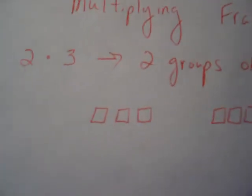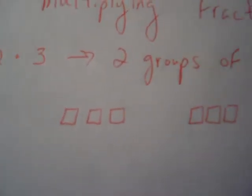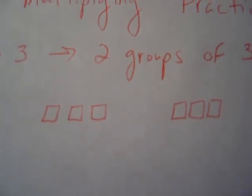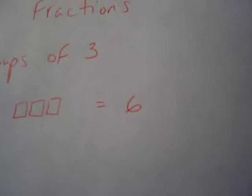So if I draw this using squares, I have one group of 3 plus a second group of 3, and if you count them all up, there are 6 objects. That's why 2 times 3 equals 6.